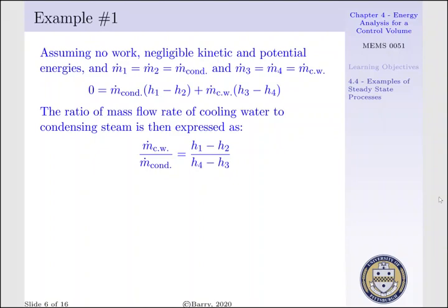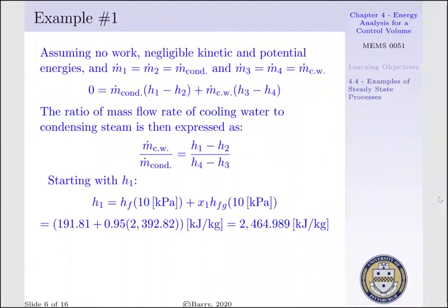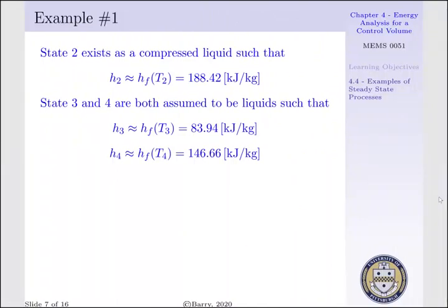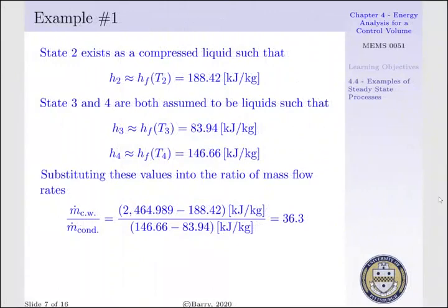Now we determine the enthalpies at each state. At state 1, we know pressure and quality, so enthalpy is found from the saturated liquid specific enthalpy plus quality times the difference of saturated vapor and saturated liquid specific enthalpies, giving h1 = 2464.989 kJ/kg. At state 2, assuming compressed liquid, h2 equals the saturated liquid specific enthalpy evaluated at T2, giving 188.42 kJ/kg. States 3 and 4 are both liquid, so we use saturated liquid specific enthalpies as a function of temperature: h3 = 83.94 kJ/kg and h4 = 146.66 kJ/kg. Substituting these values, the mass flow rate ratio of cooling water to condensing steam is 36.3.